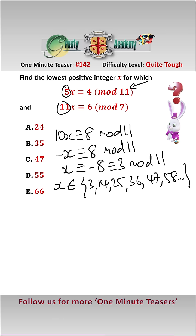And for the second equation again let's multiply this by 2, so that'll give us 22x is equal to 12 mod 7. Well 22 is equal to 1 mod 7, so we have here x is equal to 5 mod 7.